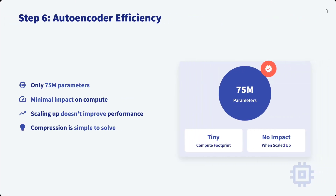Regarding autoencoder efficiency — it is quite small at 75 million parameters and has minimal impact on compute, and is quite fast as well. Scaling it up doesn't improve performance; compression is a simple problem to solve. The idea is novel yet not complicated to implement: just combine multiple tokens into vectors.